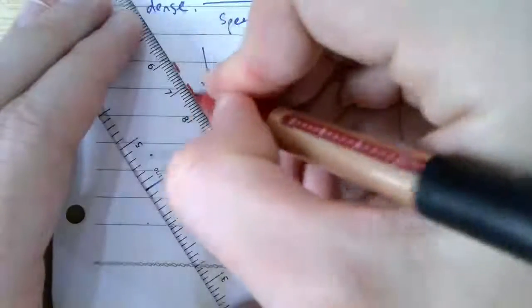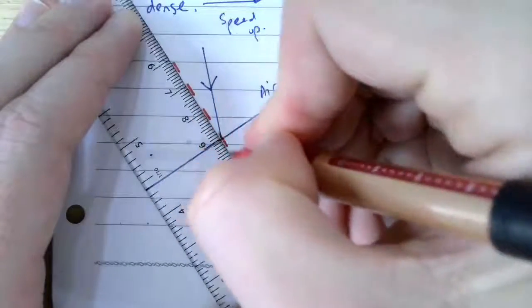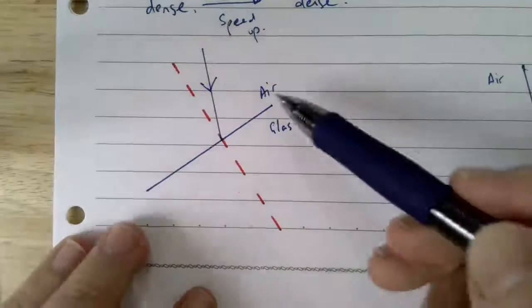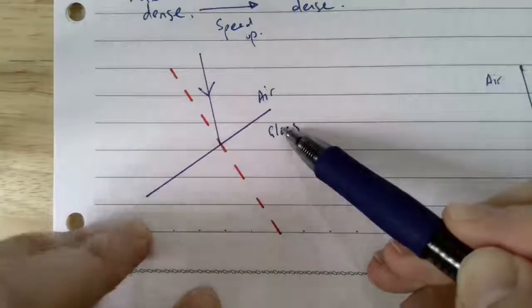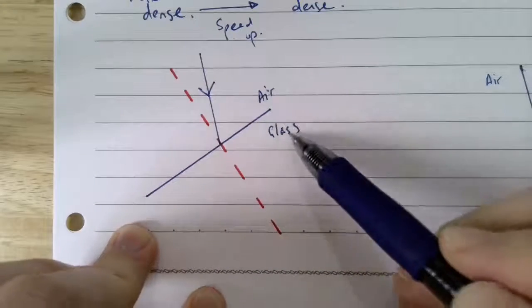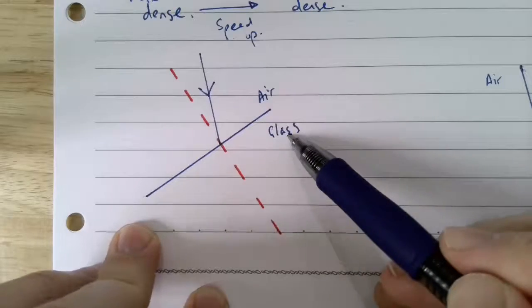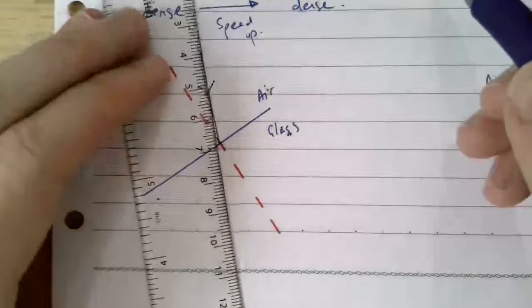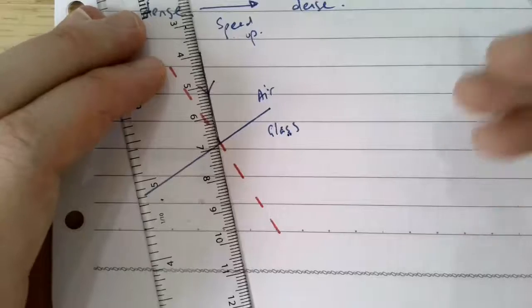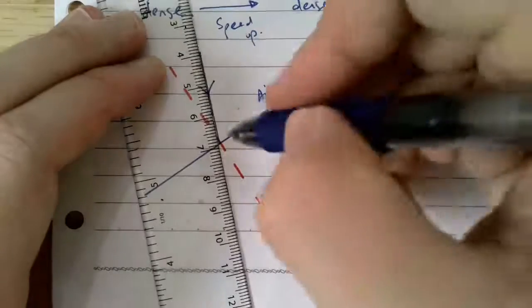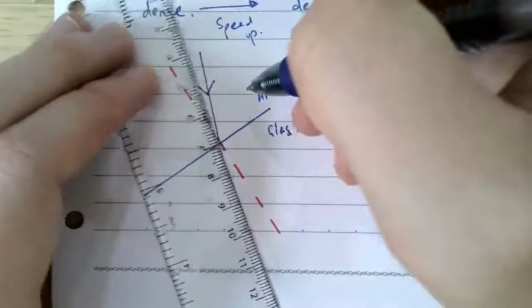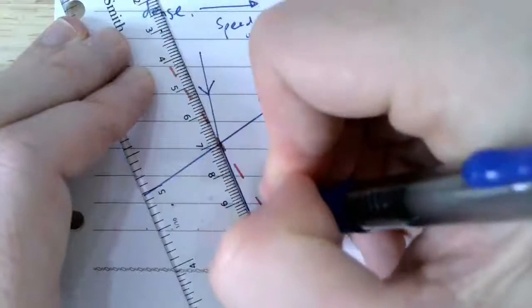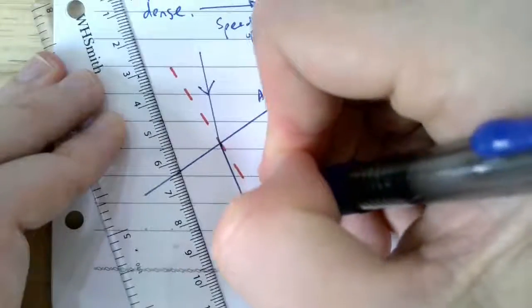Again, draw the normal line first. Then make the decision: air to glass is less dense to more dense, so it slows down and bends towards the normal. This is what it would look like going straight through, and if we bend towards the normal, it's going to look like that.